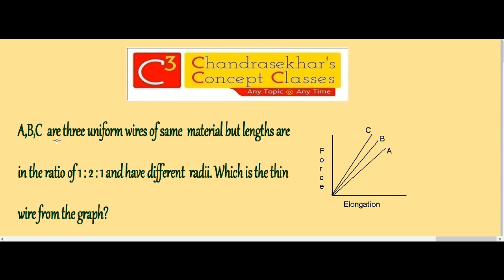ABC are three uniform wires of same material but lengths in the ratio 1 is to 2 is to 1 and have different radii. Which is the thin wire from the graph? All are made of same material but lengths are different, radii also different.